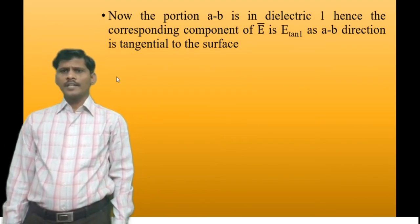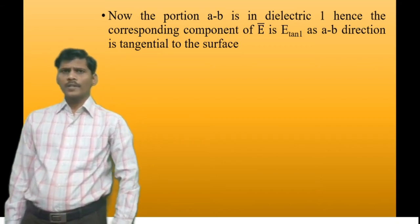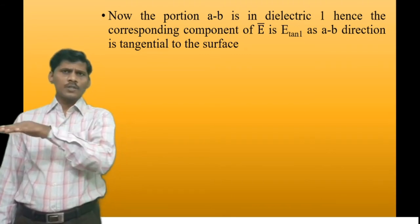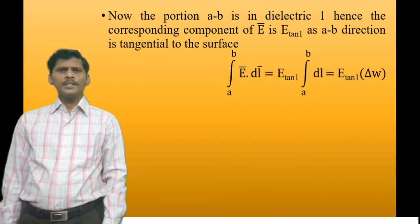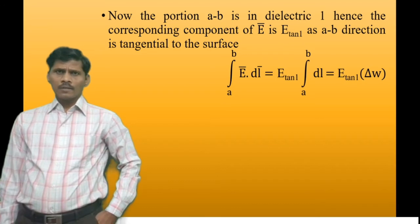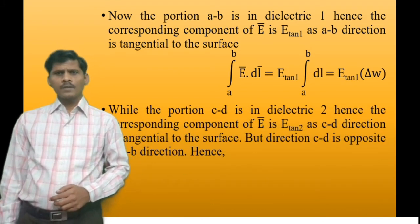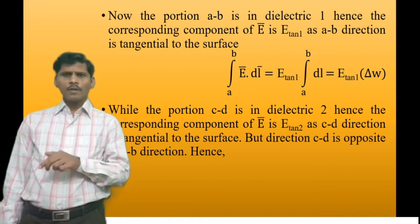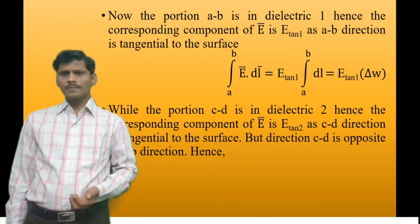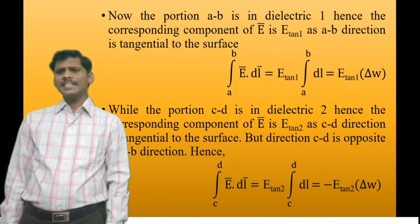The portion A to B is in dielectric medium 1. The corresponding component of electric field intensity is E-tangential-1, since the path A to B is tangential to the surface. Therefore, the integral A to B of E-bar dot dL-bar equals E-tangential-1 times delta-W. The path C to D is the same as A to B but in the opposite direction, so the integral C to D equals minus E-tangential-2 times delta-W.